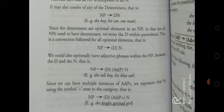Since we can have multiple instances of adjective phrases, we represent that by using the symbol of plus next to the category. That is, noun phrase arrow (D) (AdjP)+ N. For example, the bright spirited girl. The bright spirited girl is a noun phrase with determiner.